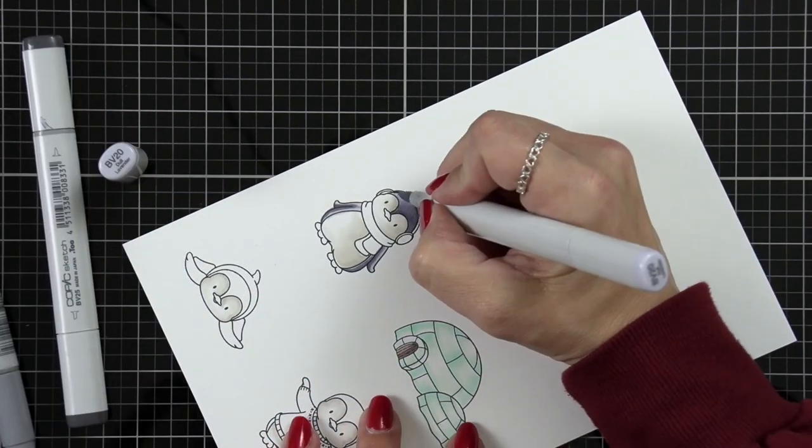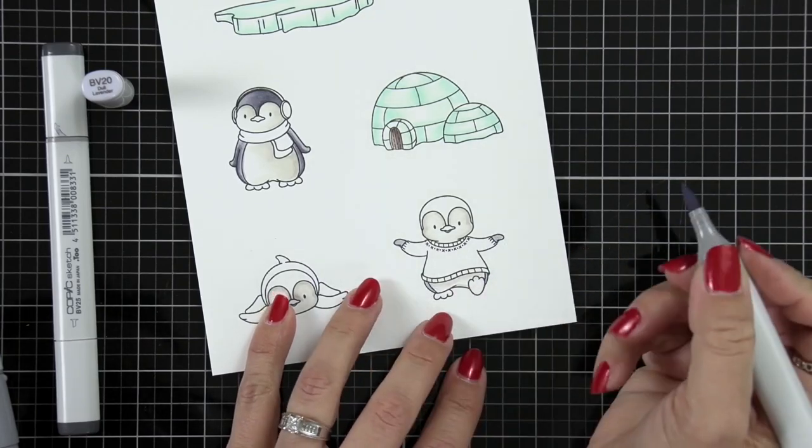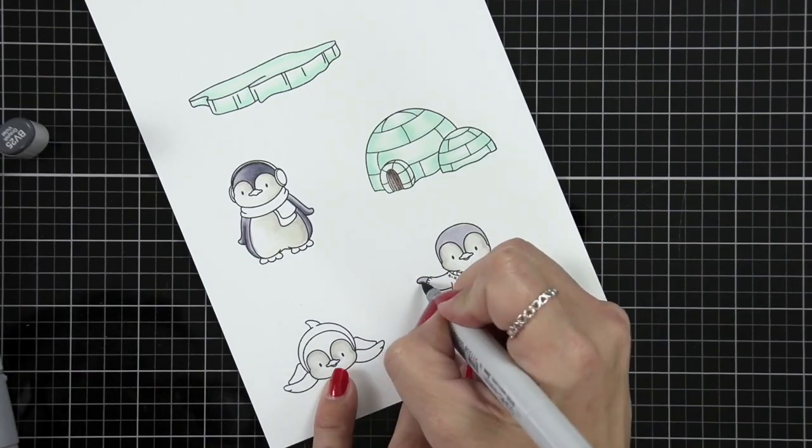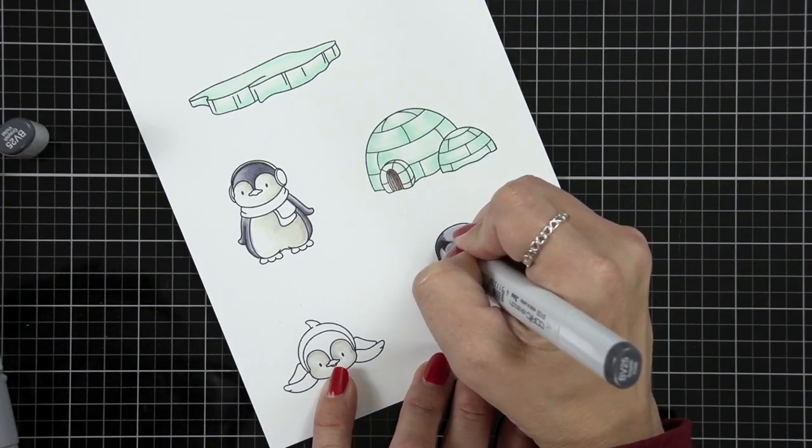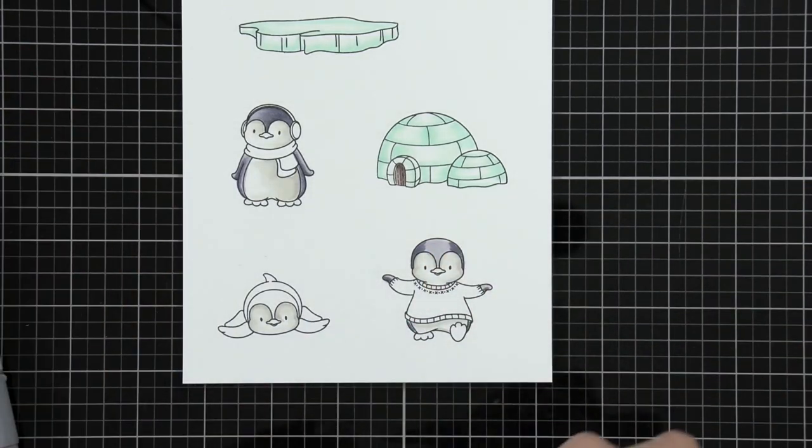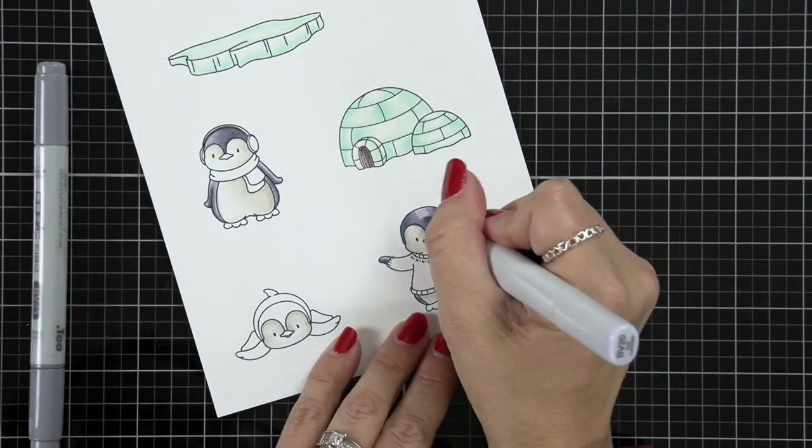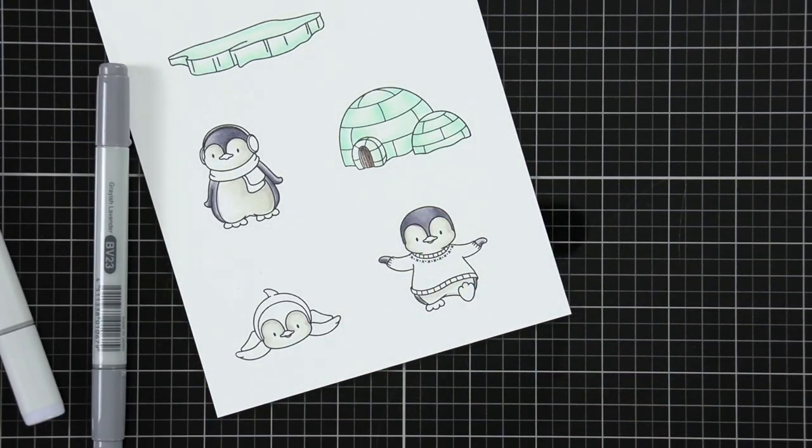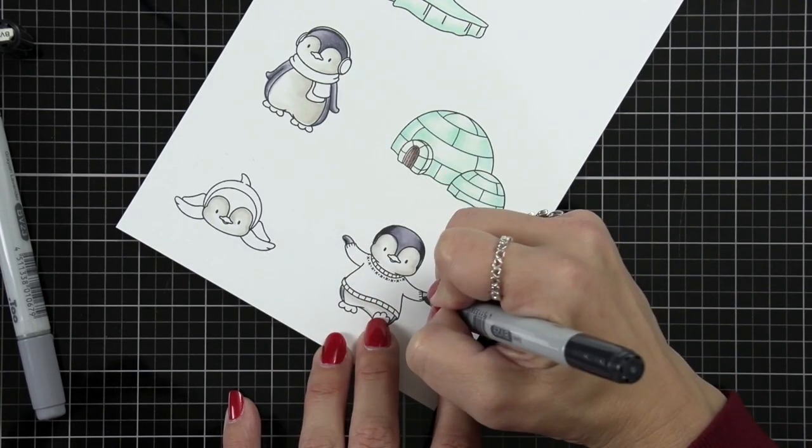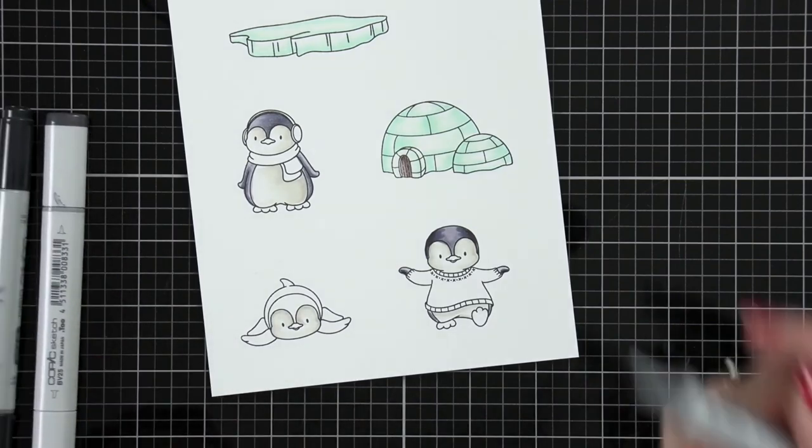So I colored this one in and when I started working on another penguin I ended up coming in with a BV 29 which is pretty dark but I think these penguins would look really cute if they were colored in like a blue if you have like maybe B99 kind of up in that range. Also some purples I think would look really cute for these and even some maybe light pinks. So I think these penguins have a lot of possibility when it comes to coloring them.